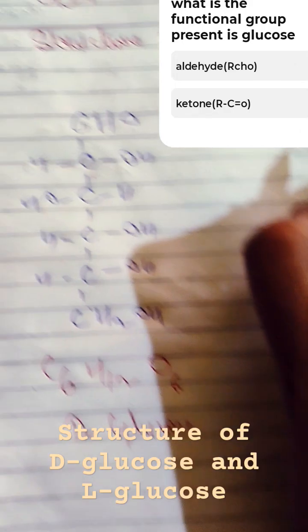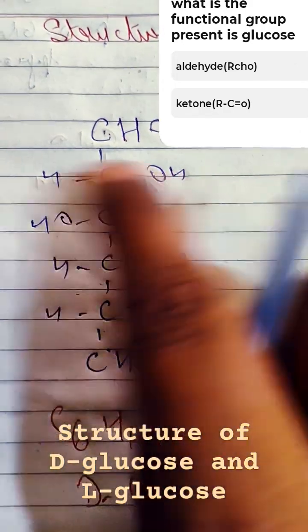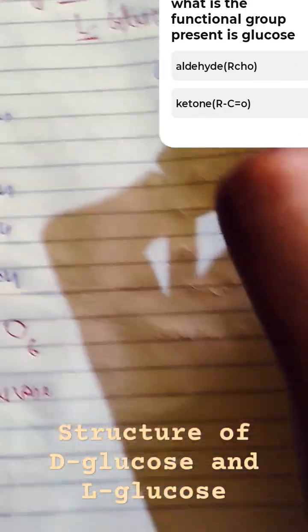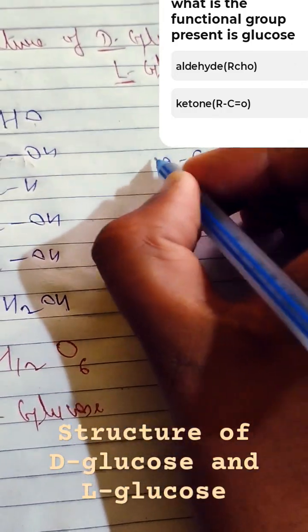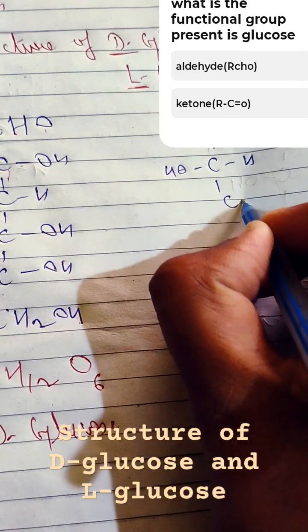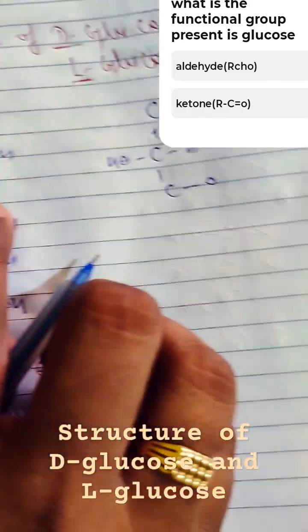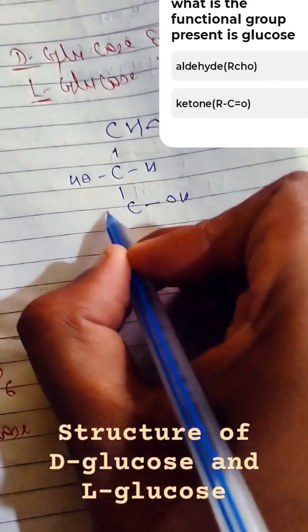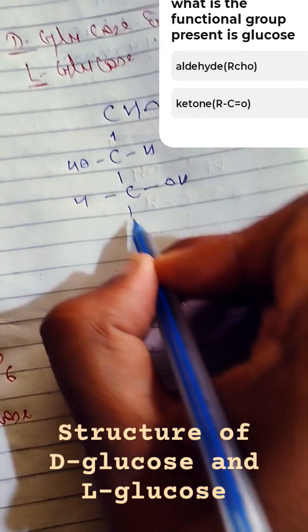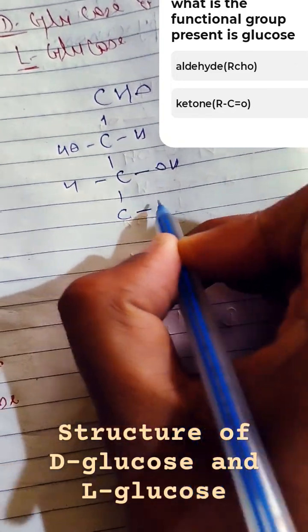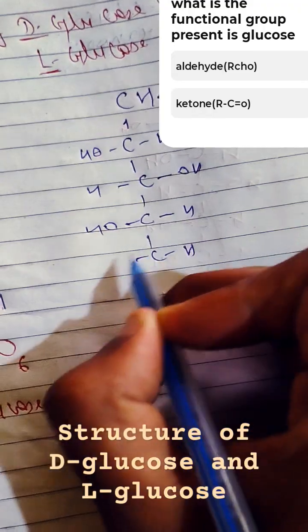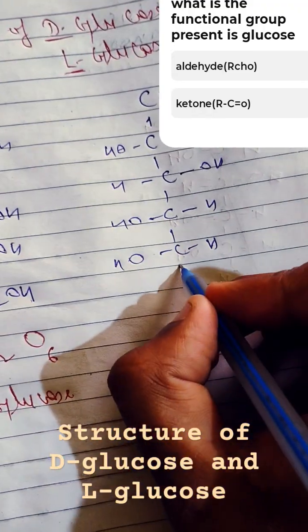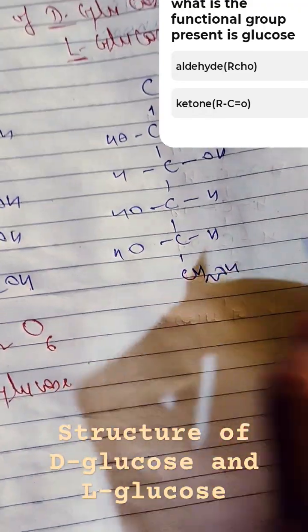Now, as you can see here, in this, OH is here, we will shuffle it. Let's shuffle. So this will be H, OH. Then this third, here is H, then what we will do, OH, interchange it. Very easy. H, OH, H, OH.